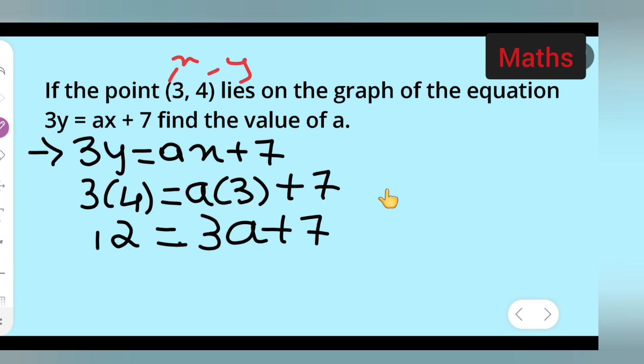So here it will be 3a equals 12 minus 7. So a is equal to 12 minus 7, which will give you 5 upon 3. So what is the value of a? 3a is equal to 5, so a is equal to 5 upon 3.